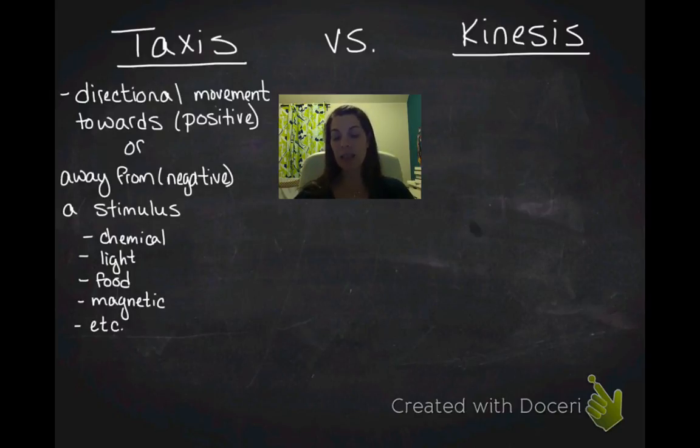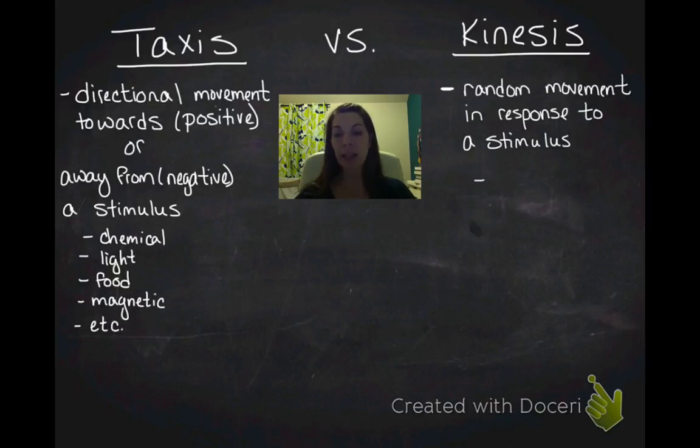Kinesis, on the other hand, is random movement in response to a stimulus. Because it is random, it's non-directional movement.